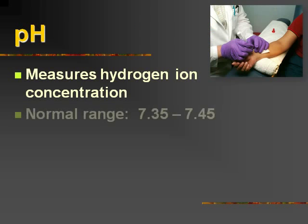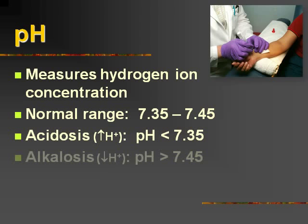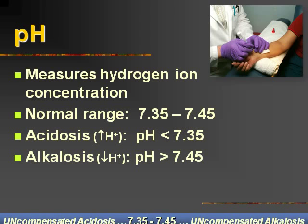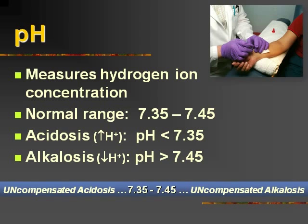The pH measures the hydrogen ion concentration in the blood, the normal range being 7.35 to 7.45, with the right in the middle number being 7.4. So if we have too many hydrogen ions circulating around in our blood, that's going to cause an acidosis, and the pH is going to be less than 7.35.